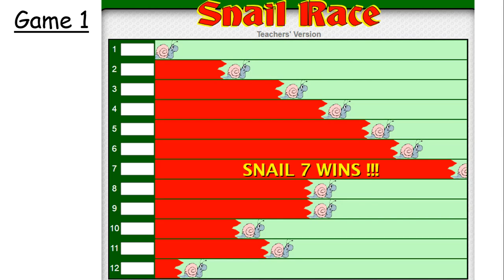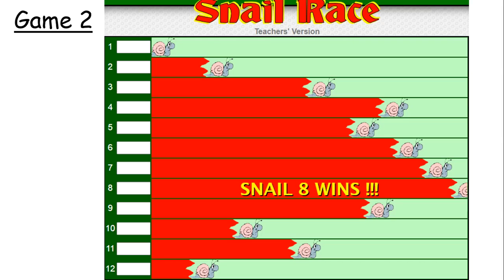So, I'm going to play another game and I'm going to be quite confident about the fact that I think snail number seven is going to win again. So, in game two, I predict snail number seven is going to win. When I played the game, snail number eight won. So, snail number seven did pretty well still, but snail number eight won this particular game.